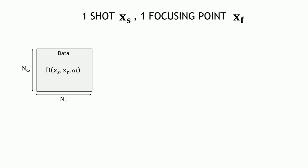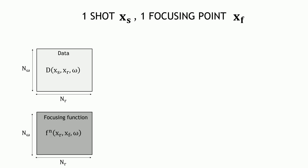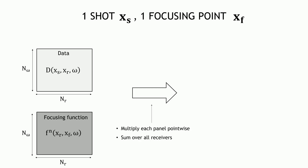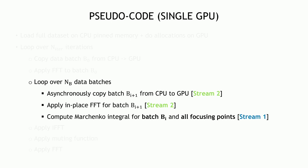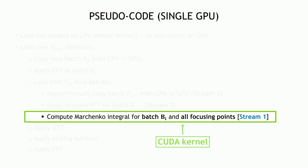To illustrate mechanically on a simple case: with one focusing point and one shot, you have two 2D arrays — the data and the focusing function. The integral simply takes those two panels, multiplies them point-wise, and stacks along the receiver axis, giving you one output trace. Keep this in mind as the basis for understanding the higher-dimensional process.